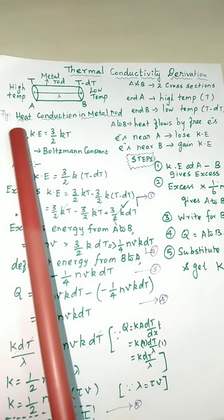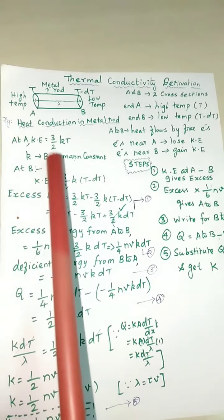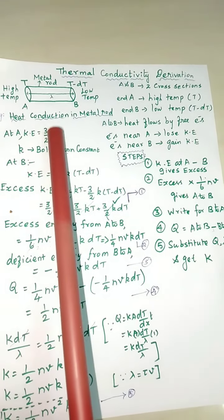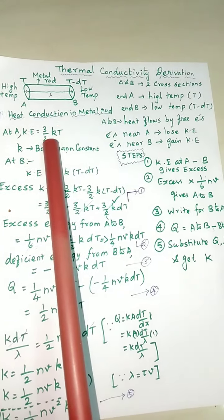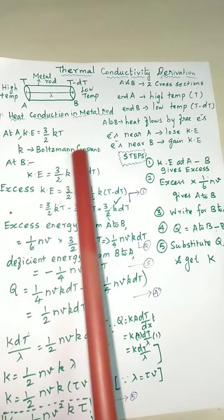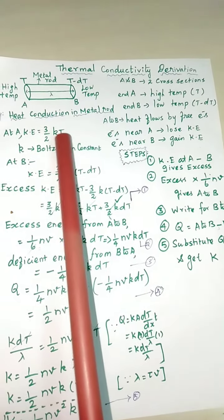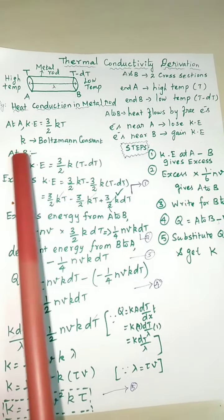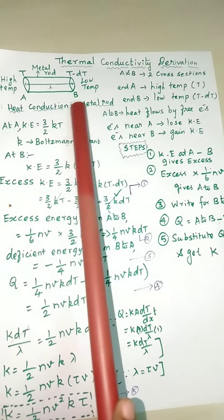Then the derivative part. At the end A, the kinetic energy - generally we know that half mv squared. For this case with a temperature term, we have to use 3 by 2 kT. This k is the Boltzmann constant.